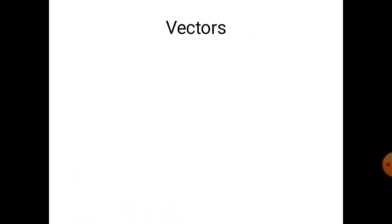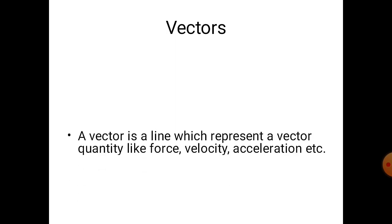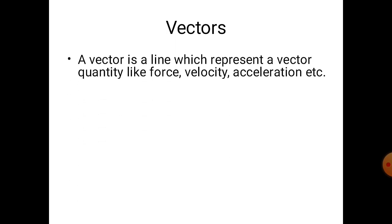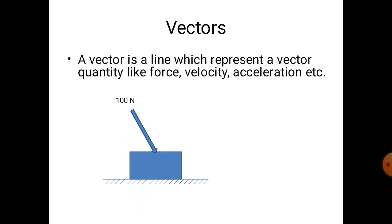Now we will talk about vectors. A vector is a line direction which represents a vector quantity like force, velocity, acceleration, etc. For example, let us consider a force of 100 N acting on a body as shown. If I want to represent it by a vector, I need to assume a suitable scale to draw that vector.